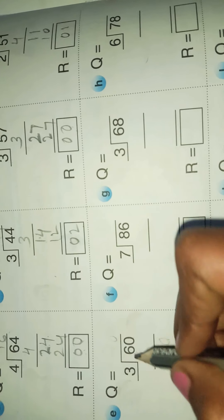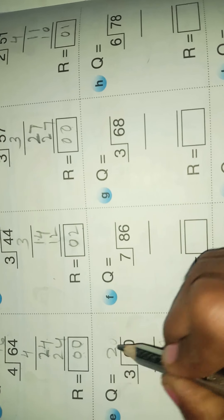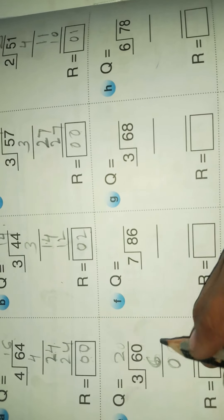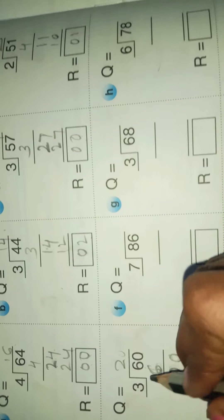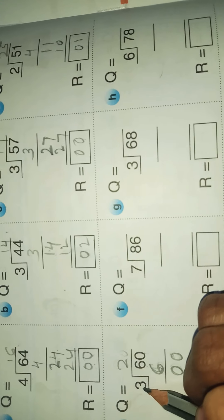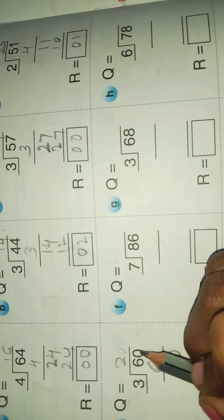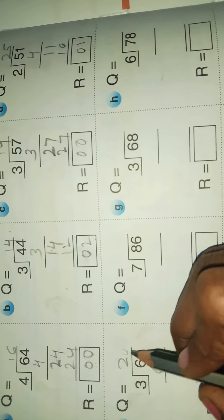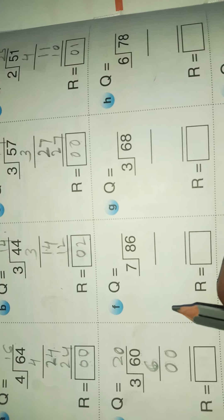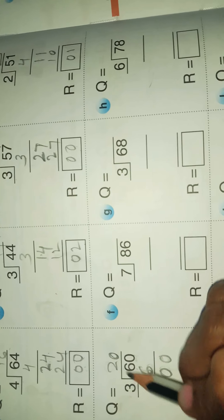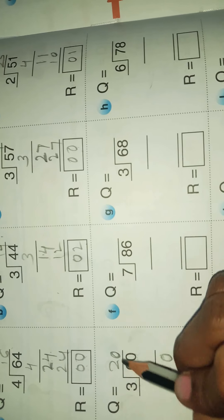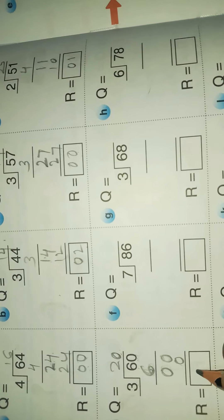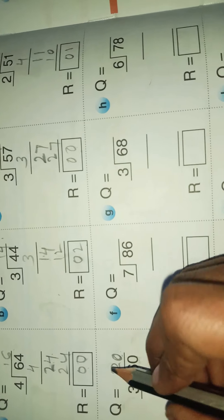Take the nearest or less than number. 3 goes into 6 two times, so it becomes 0. Bring down the next digit 0. The divisor 3 goes into the bottom number 0, zero times, therefore put the 0 on top. Multiply the divisor 3 into 0, it becomes 0.